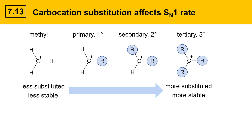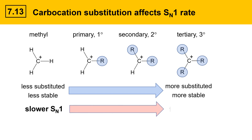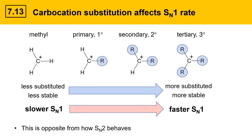Carbocation stability affects SN1 rate. The less substituted, less stable carbocations react slower, while the more substituted, more stable carbocations form faster — and this is opposite from how SN2 behaves. This highlights an important difference between SN1 and SN2 reaction mechanisms. In SN2, the nucleophile attacks in the rate-limiting step and steric hindrance is an important factor. However, in the SN1 mechanism, it's all about carbocation stability, because carbocation stability impacts the rate-determining step.